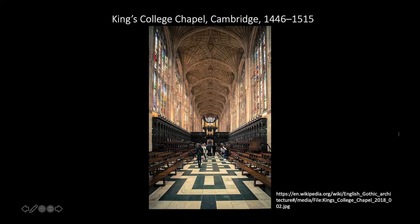Hi, Kathy here. In our last video, we looked at some of the changes that were starting to happen in Italian art in the 14th century, some ideas that were stirring that promised a new approach to art that would result in the flowering of the Renaissance. This week, we finally arrived at that point, the 1400s, aka the 15th century, or as art historians like to call it the Quattrocento.